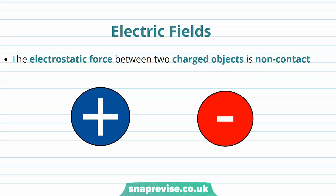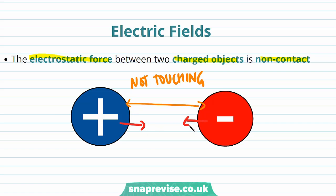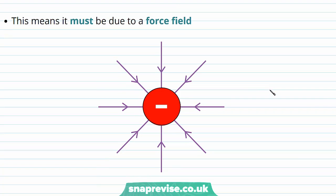We're now going to discuss what an electric field is. The electrostatic force between two charged objects is non-contact, so even though these charges are not touching, they still exert an attractive force on each other. This means that the electrostatic force must be due to a force field, and we've drawn some lines of this force field here. These are called field lines.